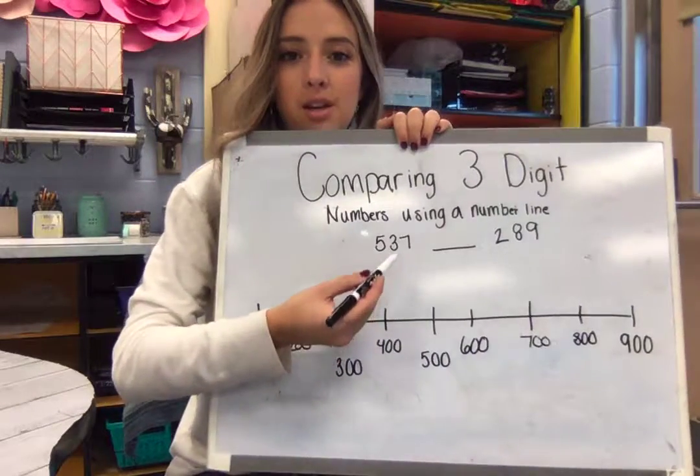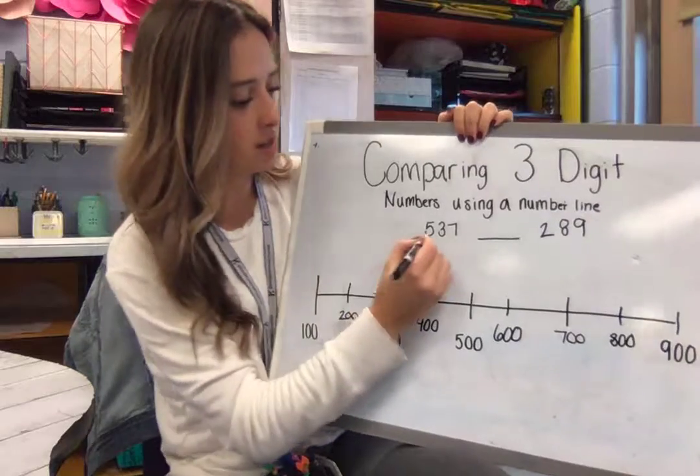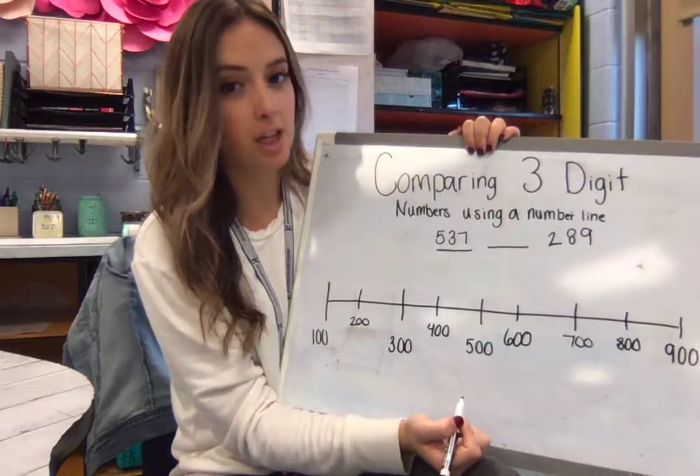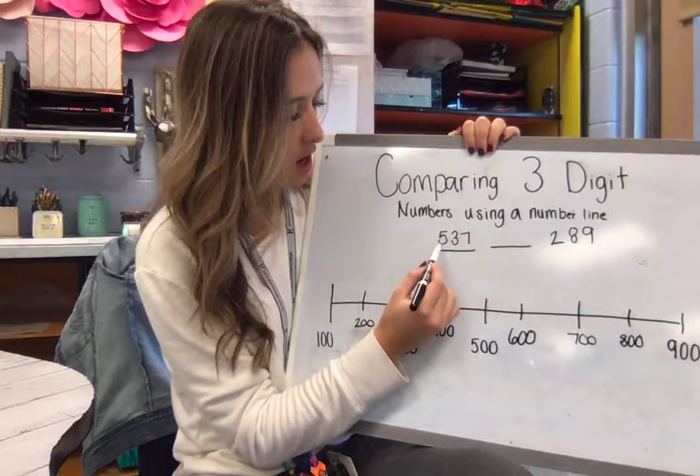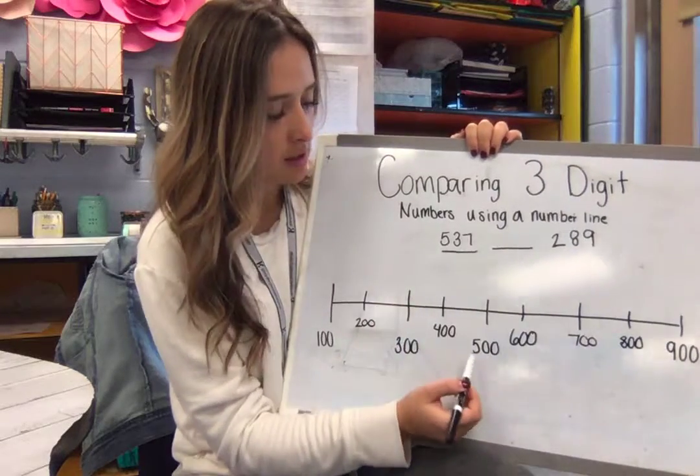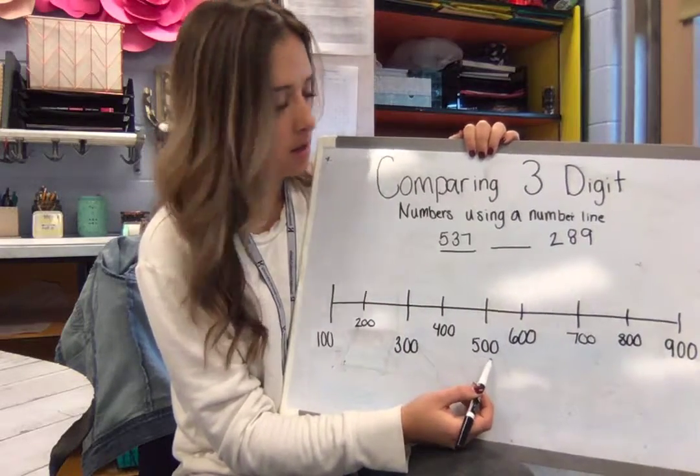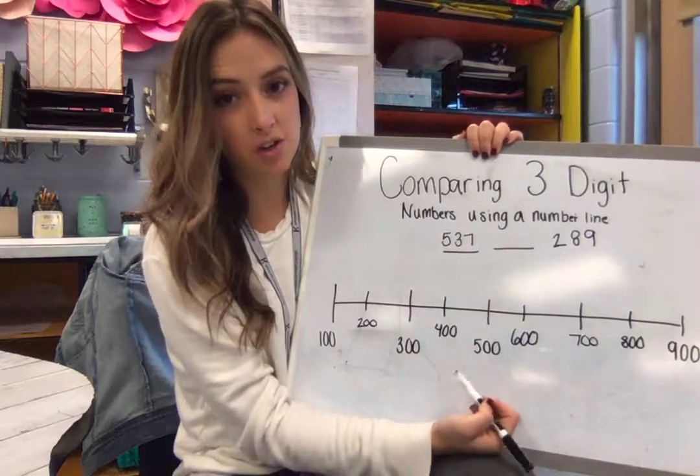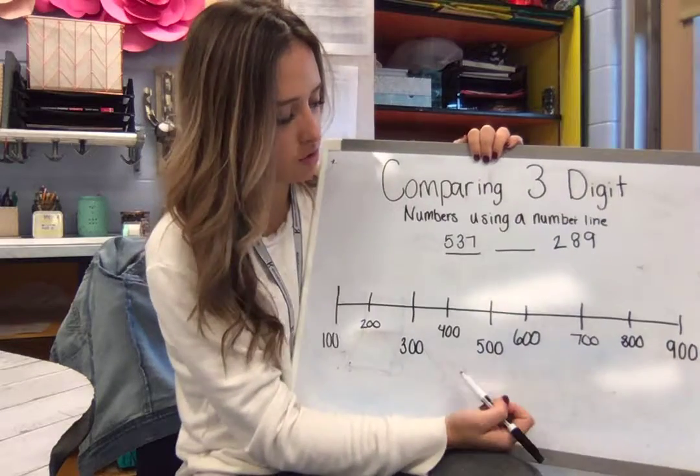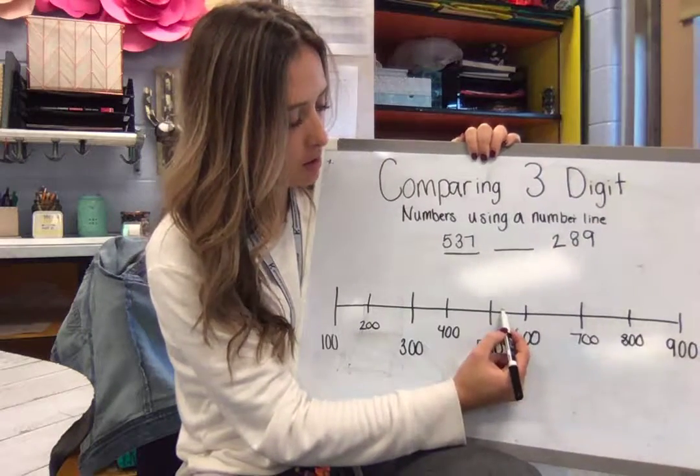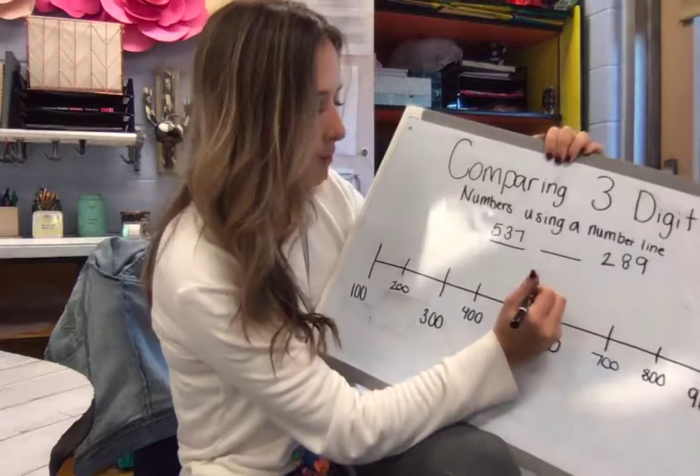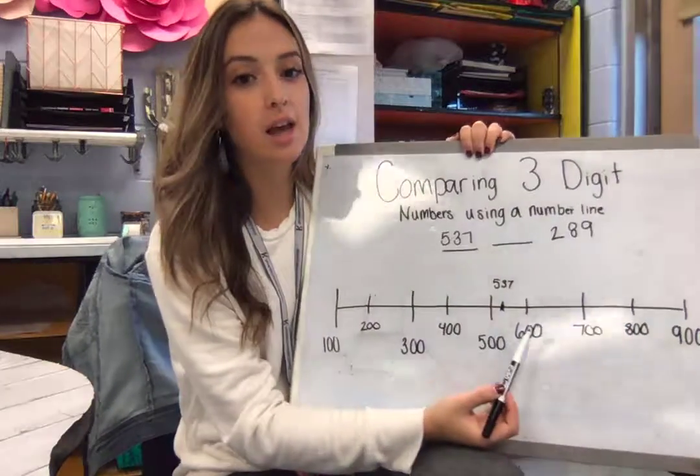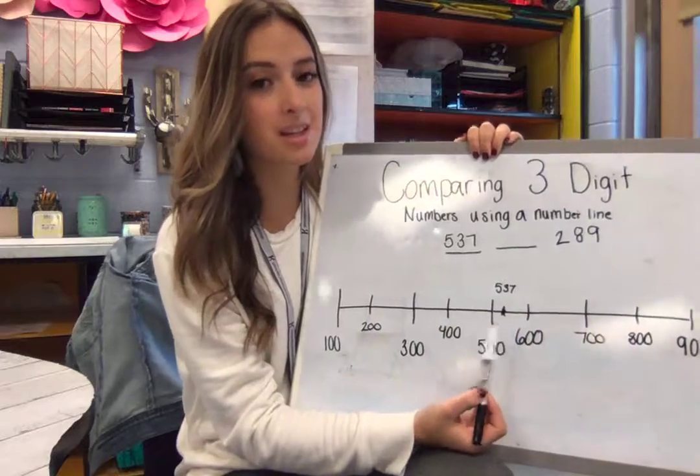So, our first number that we have right here is 537. I know that five hundreds is 537. So, I know that it's not in the middle, right? 550 would be between 500 and 600. So, I would put it about right here. It's not yet to 600, but it's a little bit more than 500.